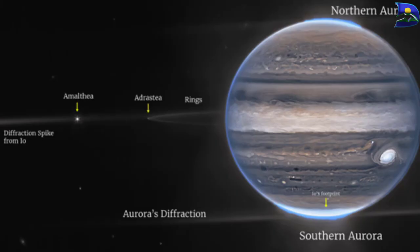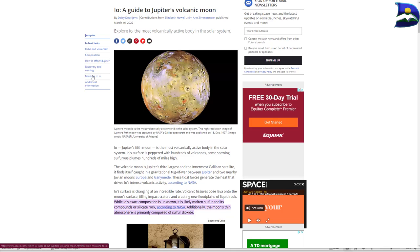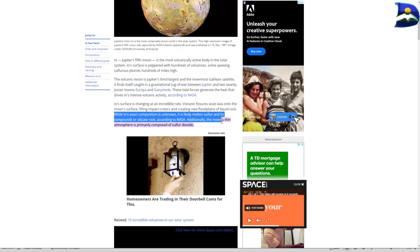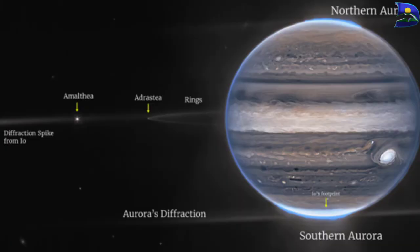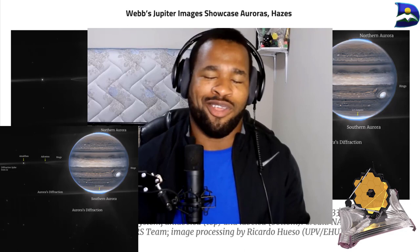Another feature noted is diffraction sparks from Io — if anyone knows more about that, please drop a comment below. We also have a couple of interesting moons identified: Amalthea is one of the moons of Jupiter, and Adrastea is another moon noticed in the background. There are also little white spots around the background of Jupiter, which are actually galaxies that are far away — photobombing the image, according to NASA.